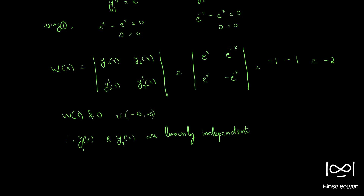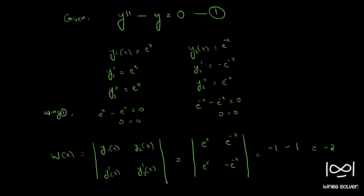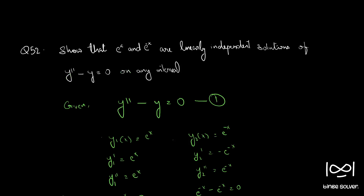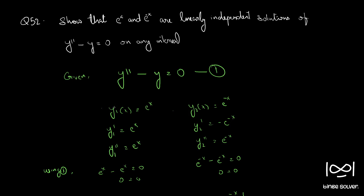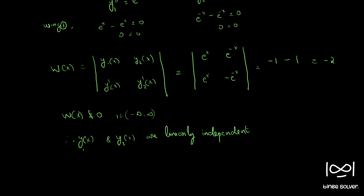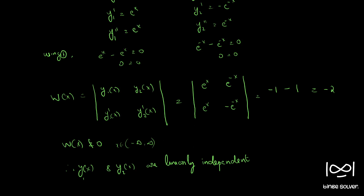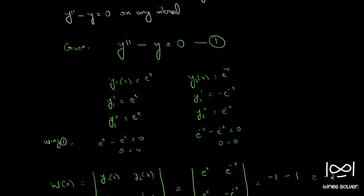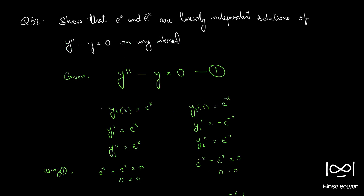So we can say that y1(x) and y2(x) are linearly independent. These two are solutions and they are linearly independent. This is the solution to question 52. We first proved that these two are solutions and then we showed these two functions are linearly independent using the Wronskian.